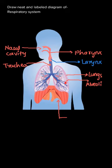Now, in the alveoli, the actual exchange of gases takes place. The oxygen entering inside the body is diffused and transported into the blood, and from the blood, carbon dioxide is released back into the alveoli, which is again exhaled out of the body.